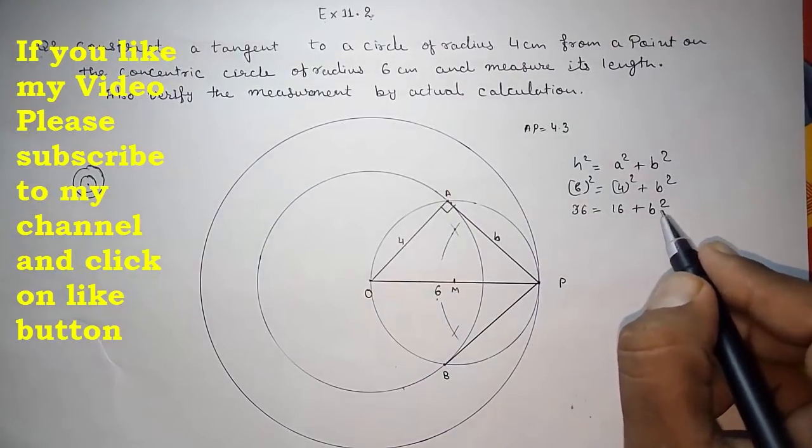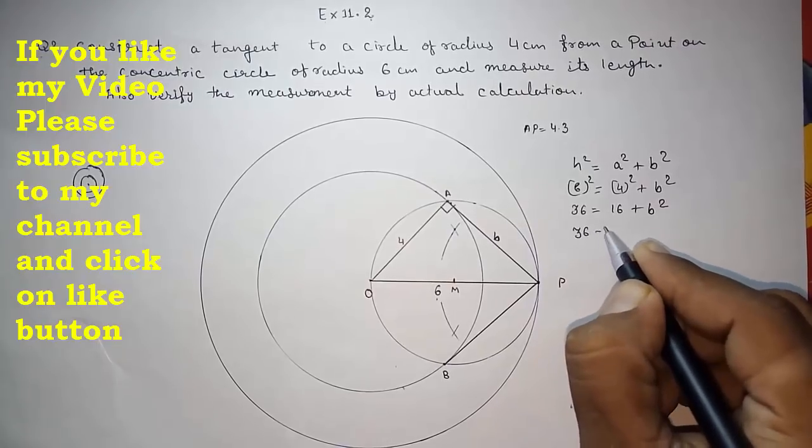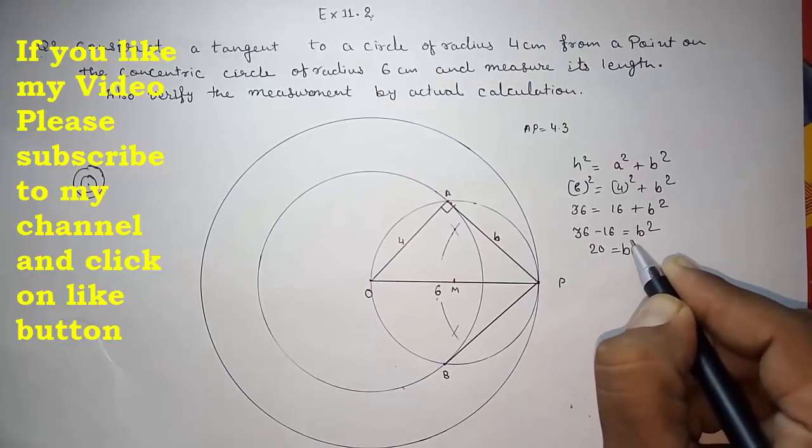Now 36 is equal to 16 plus B². Take this 16. So this will be 20, B square.